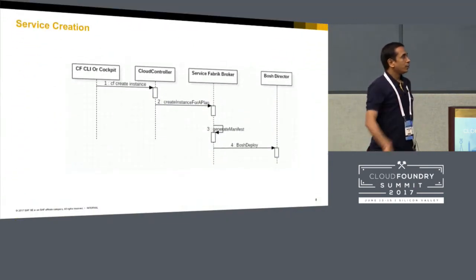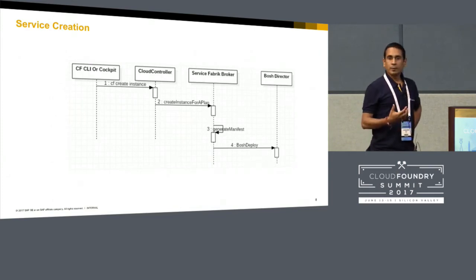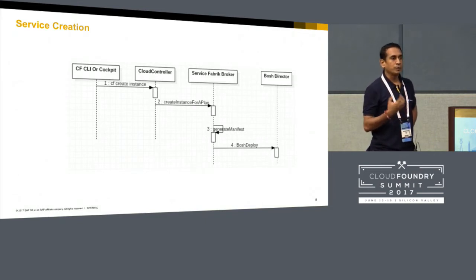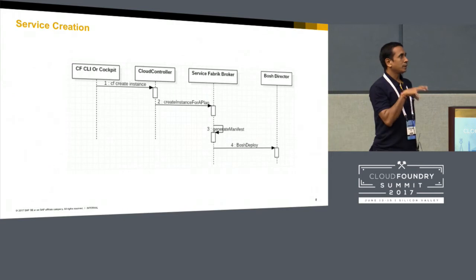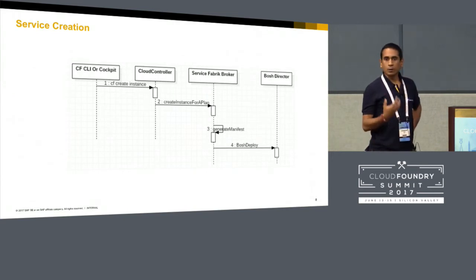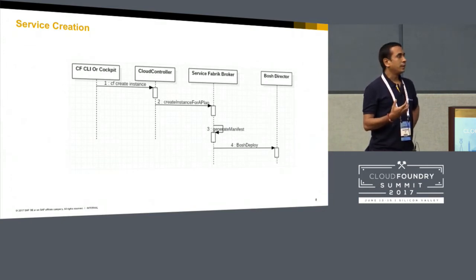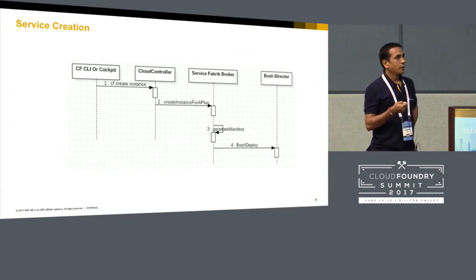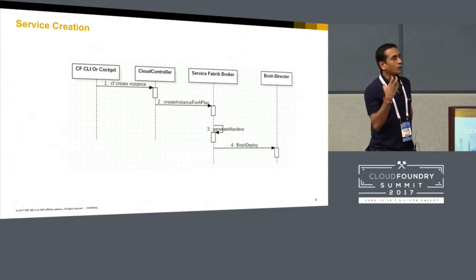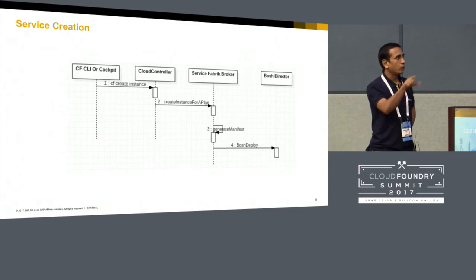This is a simple sequence diagram of how service creation works. From the CF CLI, you trigger creation of an instance. The call goes to the Cloud Controller, which invokes the service broker. In the case of BOSH, it generates a manifest acceptable by BOSH, also injecting network configuration to control how many IPs a deployment gets. Once the manifest is generated, it calls the BOSH Director over HTTP API and triggers the deployment.